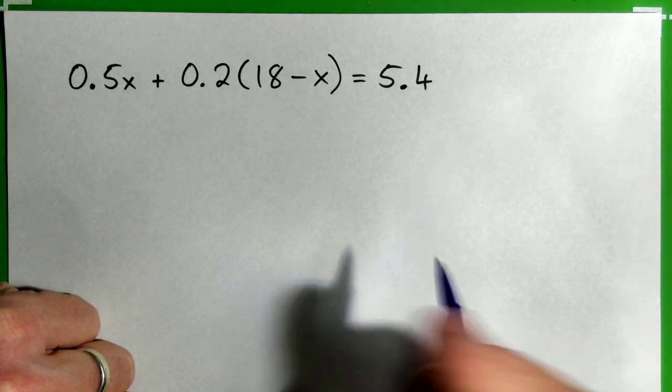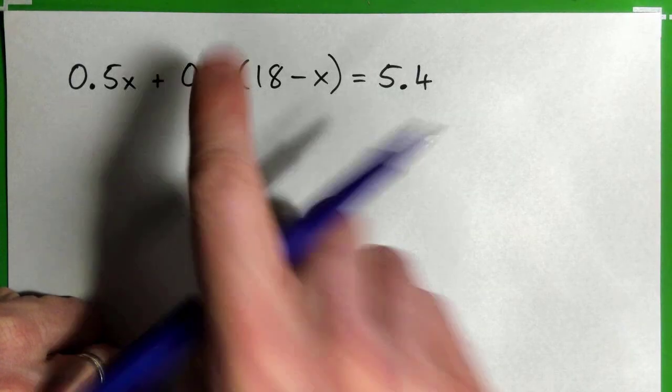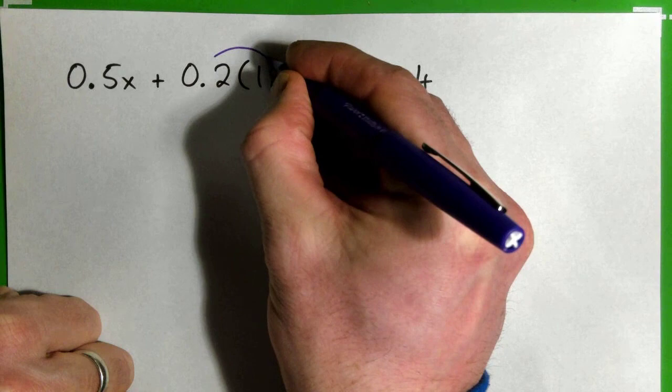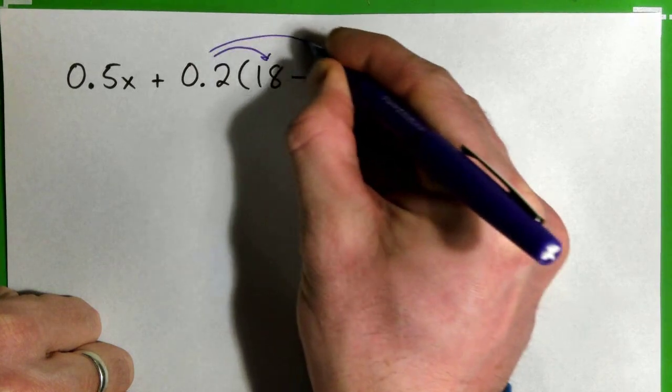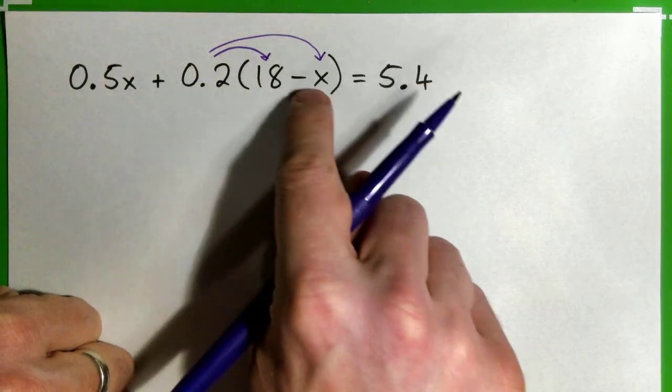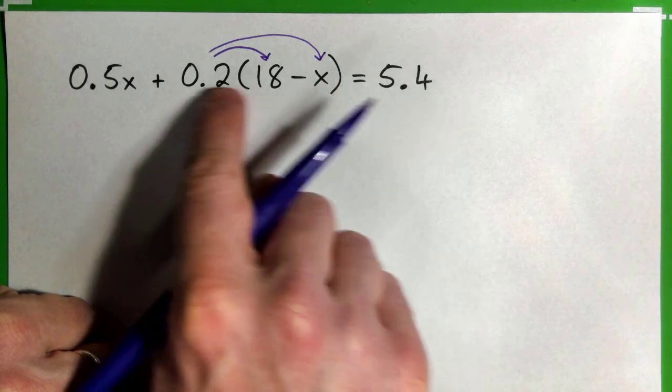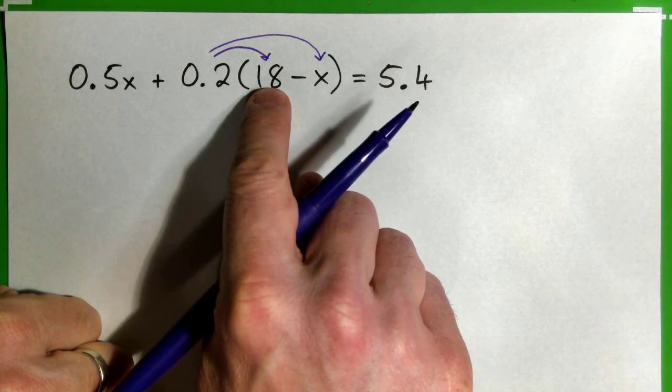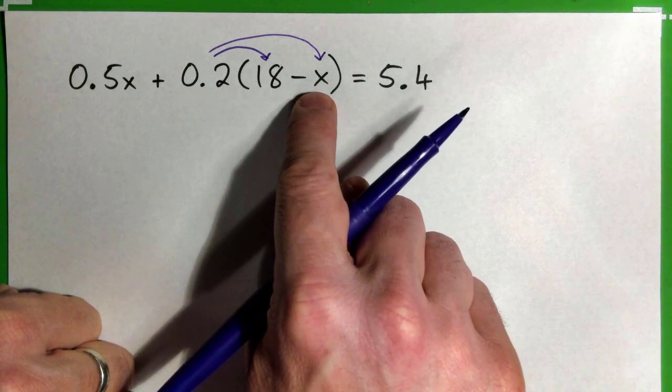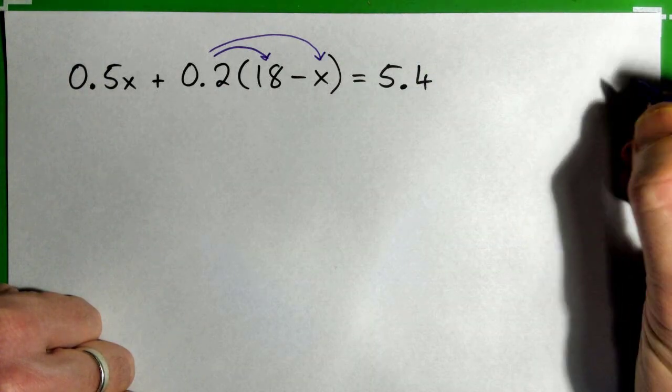And we've got to multiply this 0.2 in against the 18 and then multiply it with the negative x. So it's 0.2 times 18 and then 0.2 times negative x.